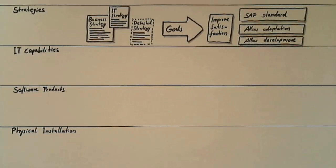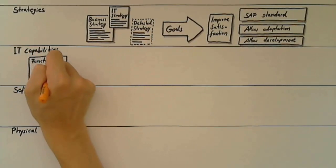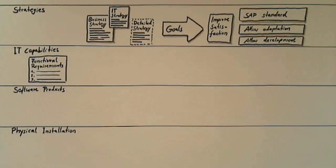The IT capability level is where we collect the various capabilities needed to meet the goals described at a strategy level. Capabilities are functional requirements that need to be delivered later by an application or a product.